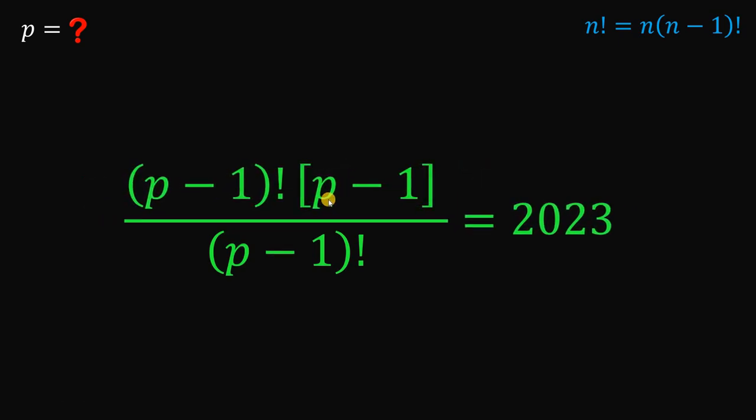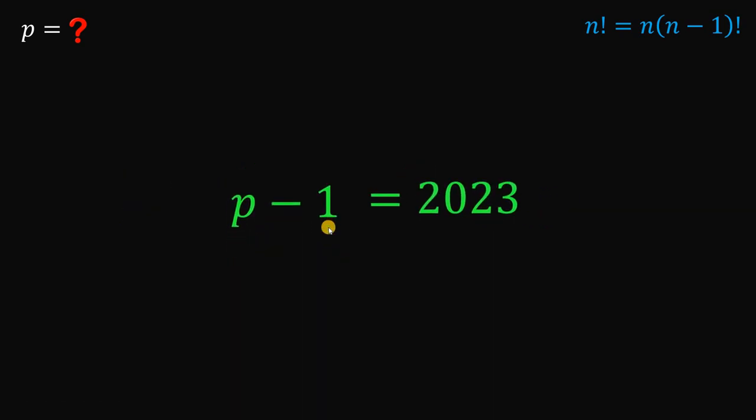So let's go back to its factored form. Now we have P minus 1 factorial on the numerator and we also have P minus 1 factorial on the denominator, so we can cancel both of them. This is just 1. So this will give us P minus 1 equals 2023.